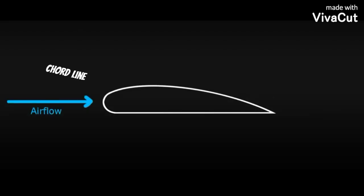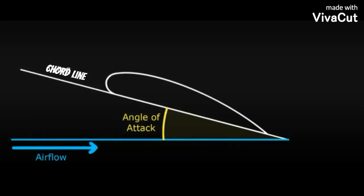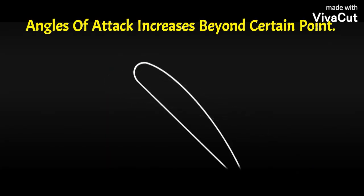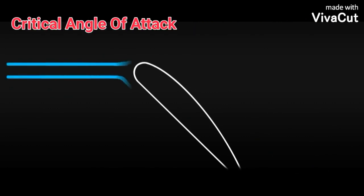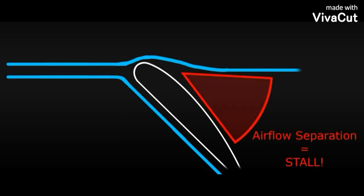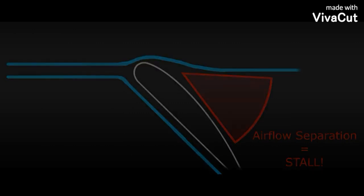Another important definition is angle of attack. As you can see on the screen, the angle between the chord line and relative airflow is known as the angle of attack. Another term is stall — a condition in aerodynamics or aviation where the angle of attack increases beyond a certain point, then lift starts to decrease. That certain point is known as the critical angle of attack. Above the critical angle, the airflow starts to separate, turbulence is created, air pressure in that area increases, and that's why the aircraft starts to move in a downward direction due to this reverse air pressure difference.